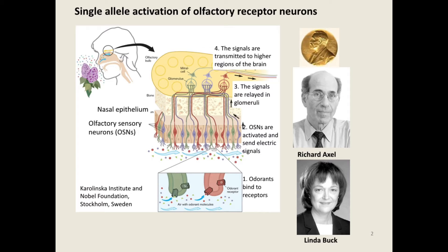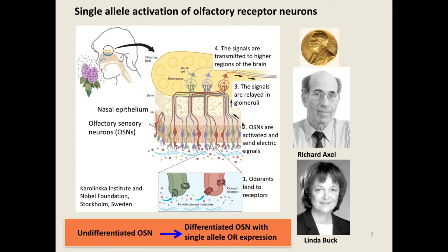An amazing observation is that each neuron only expresses one type of receptor — actually one allele of the OR gene. Richard Axel and Linda Buck received the Nobel Prize for discovering the receptors and this monoallelic expression phenomenon. But the mechanism for monoallelic OR expression remains unknown for decades.